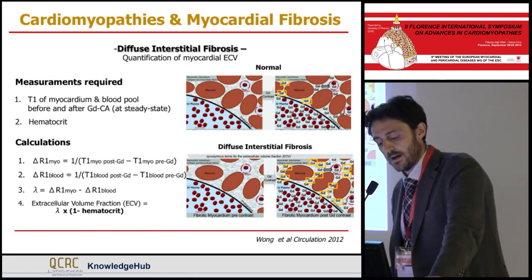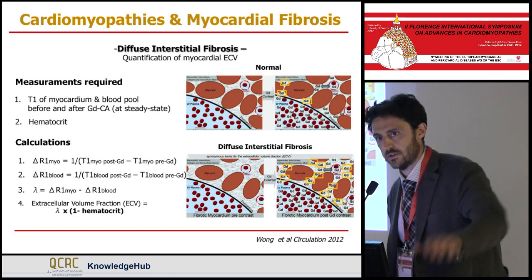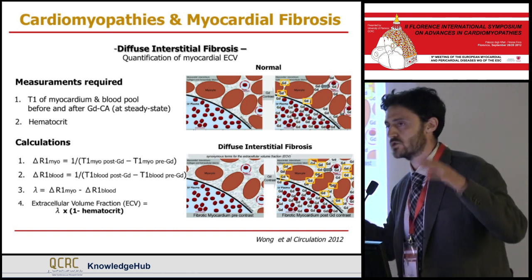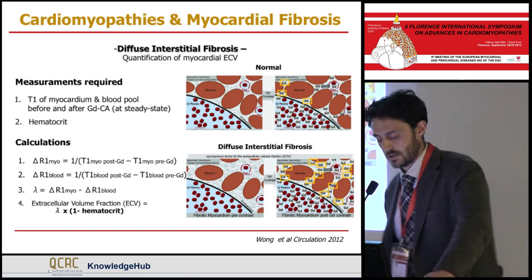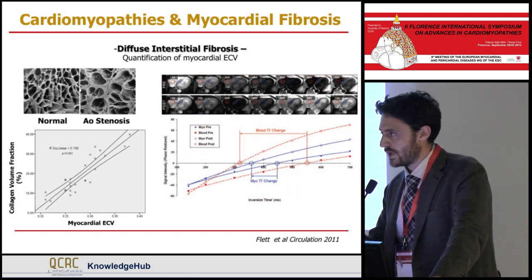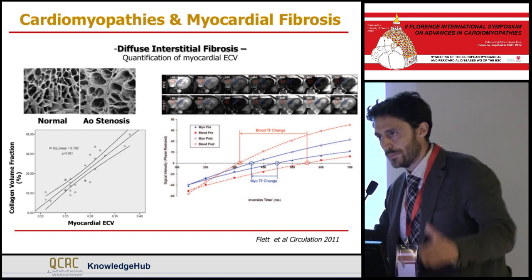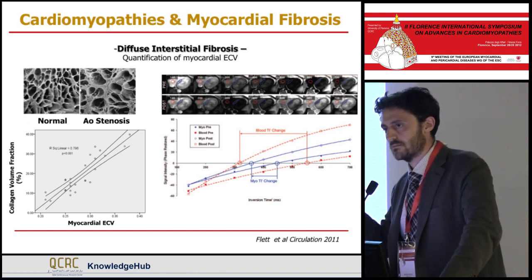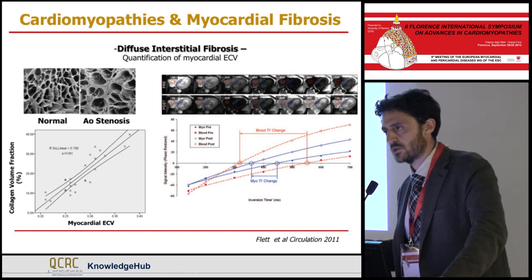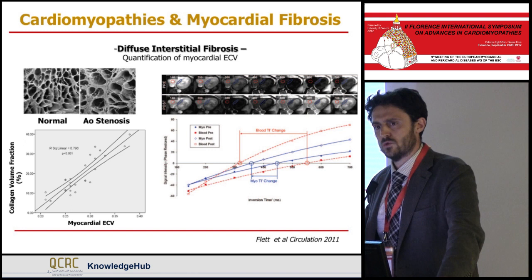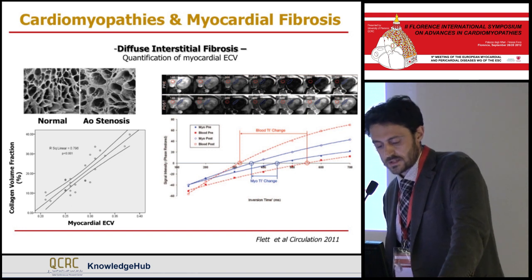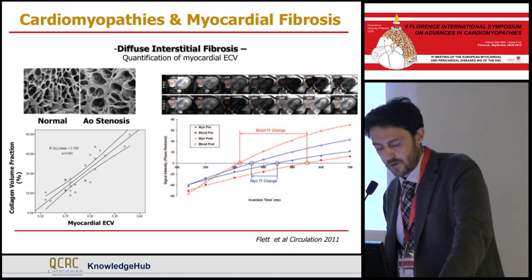By using this formula — multiplying the coefficient of distribution of gadolinium at steady state by 1 minus hematocrit — we can calculate extracellular volume fraction, which in normal subjects is in the range of 20%, representing the cardiac interstitium. In a paper from the London group, this measurement was compared with the collagen volume fraction detected on the basal septum in patients undergoing myectomy for hypertrophic cardiomyopathy or heart valve replacement for aortic stenosis. There is a very good correlation between the two measurements, with an R-squared of about 0.8.